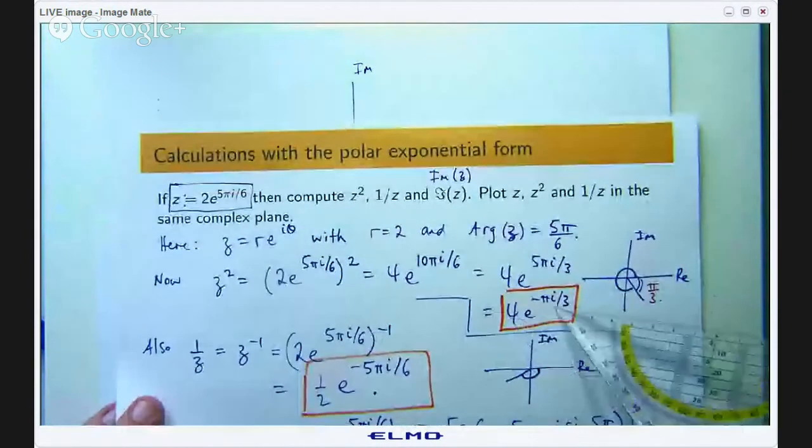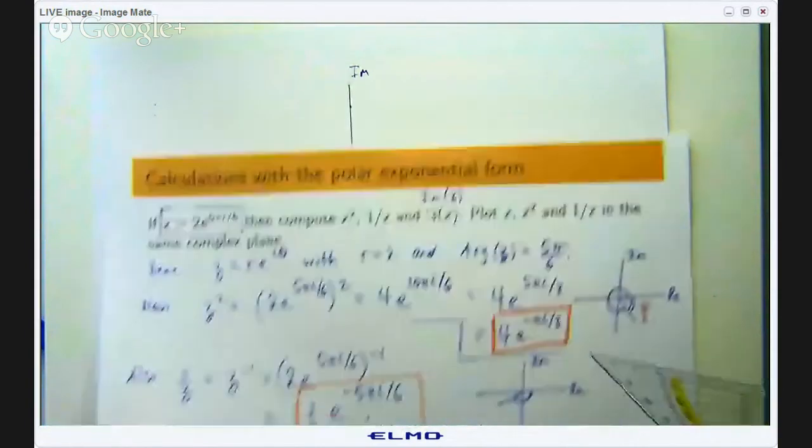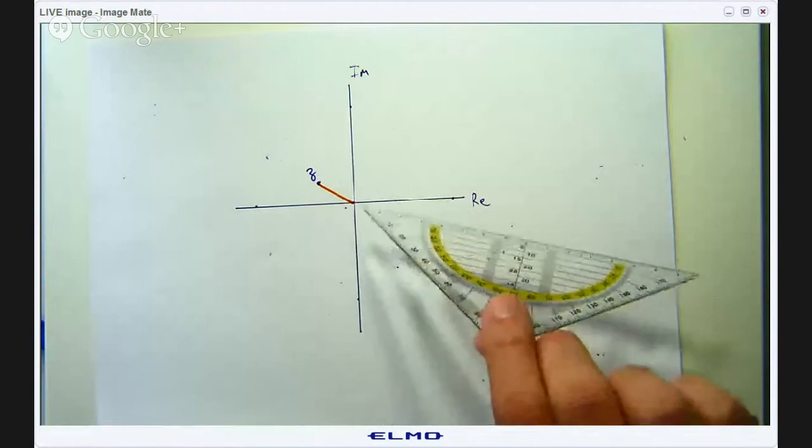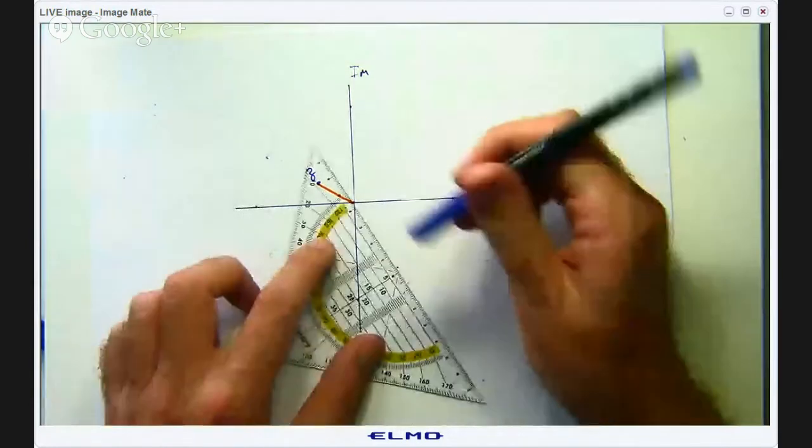Go out 4 and rotate π/3 in the clockwise direction. So we would go down here and out 4 units.